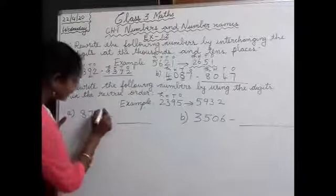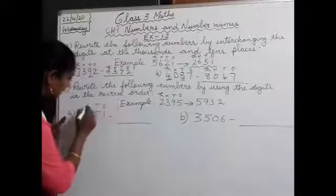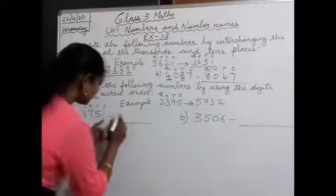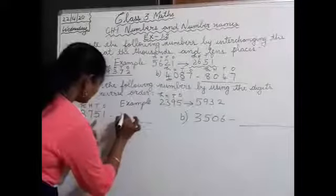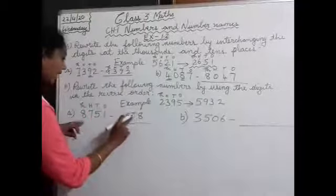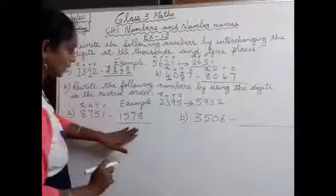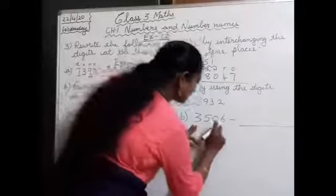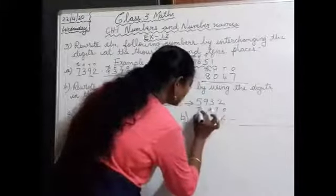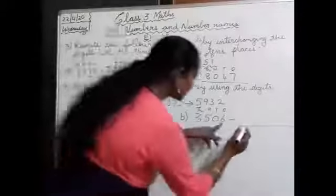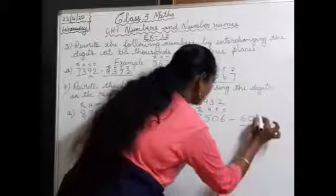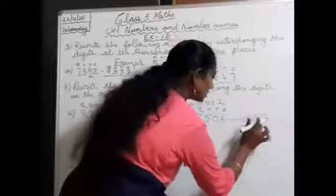Part A: 8751. We are going to write it in reverse order: 1578. Next, Part B: 3506. We are going to write it in reverse order — ones, tens, hundreds, thousands. First number will be 6, next 0, next 5, and the last number will be 3. So 6053.